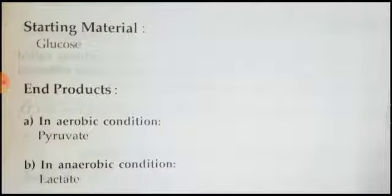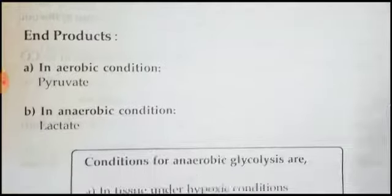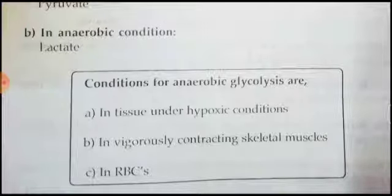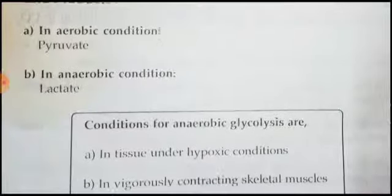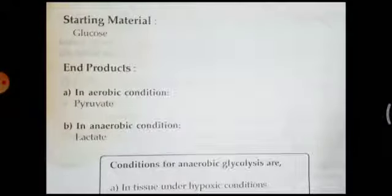The starting material of glycolysis is glucose. The ending material, based on the situation — aerobic or anaerobic — will be different. In aerobic conditions it will be pyruvate; in anaerobic conditions it will be lactate. Conditions for anaerobic glycolysis include tissues under hypoxic conditions, during vigorous contracting skeletal muscles, and in red blood cells (RBCs), where lactate formation takes place.